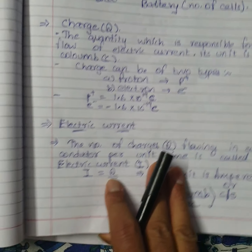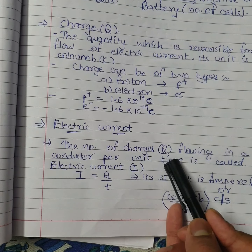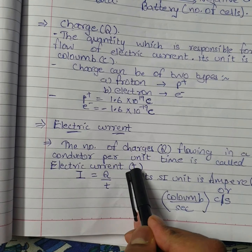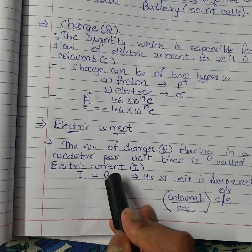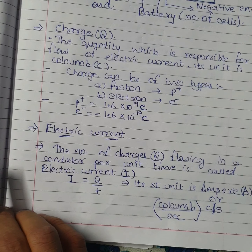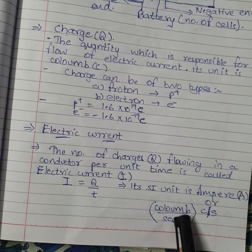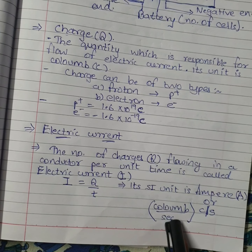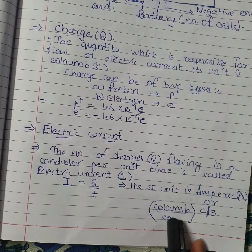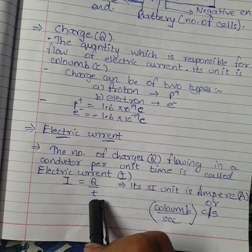Electric current is the number of charges flowing in a conductor per unit time. The formula is I = Q/T, where Q is charge and T is time. The unit of electric current is ampere, or equivalently coulomb per second. So there are two units of electric current: ampere or coulomb per second.